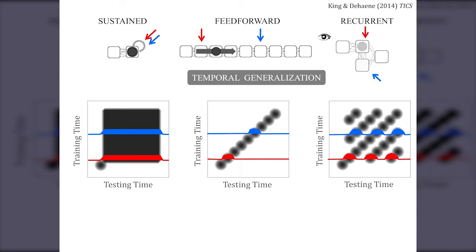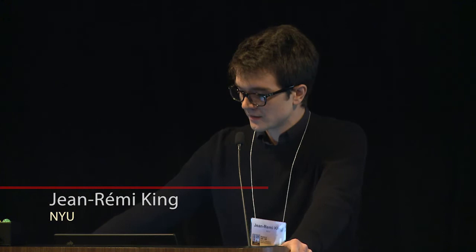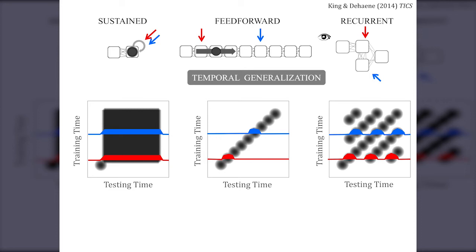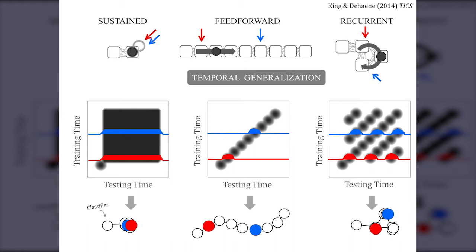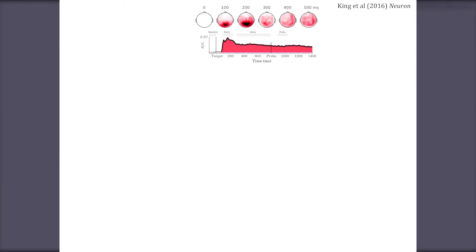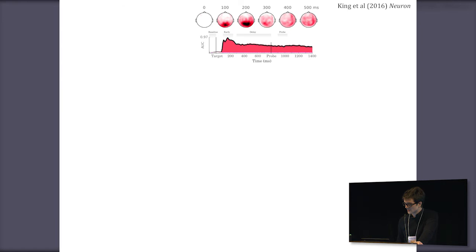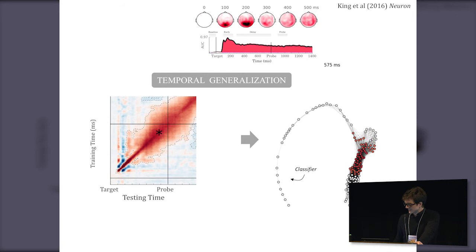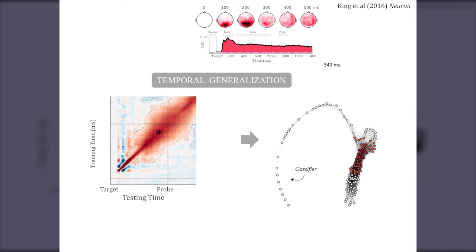These temporal generalization matrices can actually be thought of as neural networks and plotted as networks — an analysis that directly takes MEG signals and reconstructs the network corresponding to the algorithm we're looking for. In our data, predicting the presence of targets, we can unfold the network over time: activity propagates very rapidly early on, and later it is much more sustained while continuing to unfold across multiple processing stages.